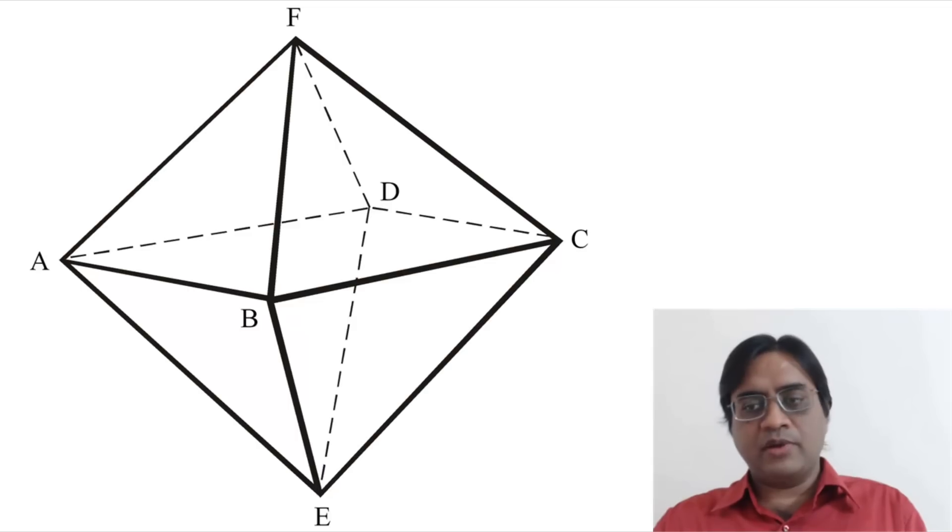Now, if we consider triangle BCF just for example sake, then it can turn clockwise, that is about the axis EF. It can turn anticlockwise, that is also about the axis EF, and it can turn downwards across the axis BC.